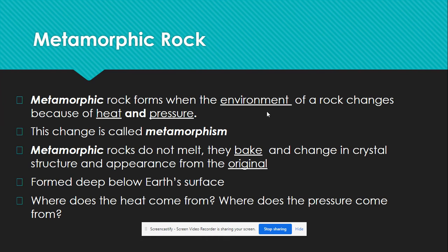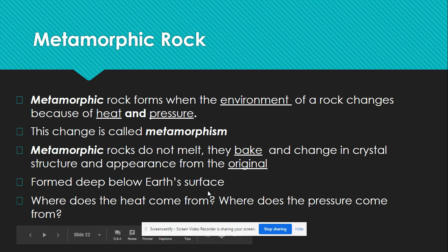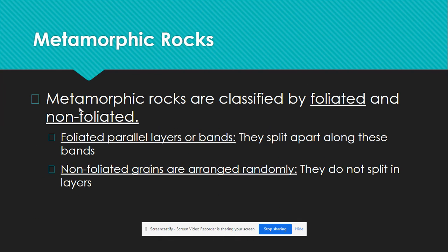We're going to talk about metamorphic rocks now. The word 'morph' means to change. They form when the environment of the rock changes because of heat and pressure, and this change is called metamorphism. It does not melt, but they bake — like if you put cookies in the oven and bake them, they come out as a different product. They change in their crystal structure and appearance from the original. Key things: they're formed deep below the Earth's surface, and the heat and pressure come from the mantle or core of the Earth. Metamorphic rocks are classified by either foliated or non-foliated. Foliated means parallel layers or bands — they split apart among these bands. Non-foliated means grains are arranged randomly and do not split in layers.